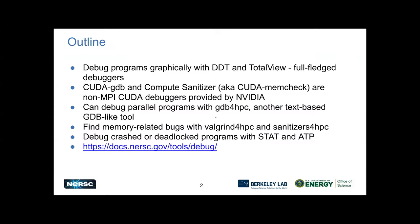I'm going to be talking about debugging on Perlmutter. It's one of the more difficult topics when you're trying to port your code, so I'm going to go over some of the tools and how you can use them with the different types of programming models and hardware. The most common ones are DDT, which is used by a majority of users, and TotalView — full-fledged GPU/CPU debuggers that support multiple programming models and have a graphical user interface.